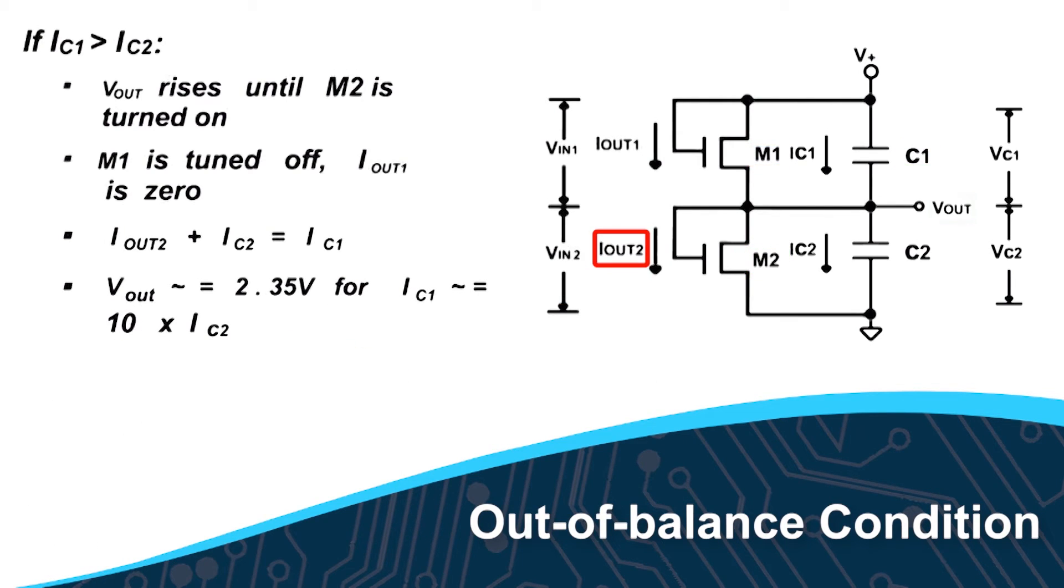Without IOUT2, VOUT can keep rising until it destroys C2 with over-voltage. Another way to view the functional mechanism is that each SAB MOSFET automatically senses the voltage across it and turns itself off or on exponentially based upon its rated design threshold voltage.